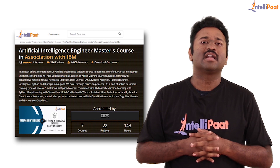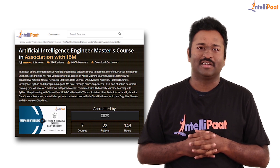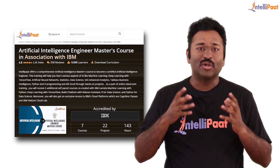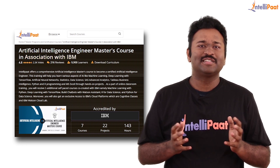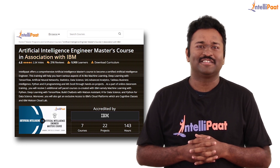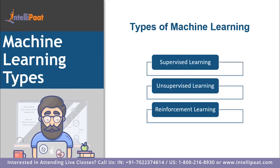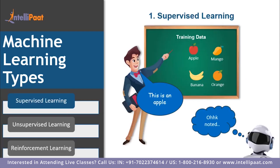Without any further delays, let's get started. Machine learning is subcategorized into supervised learning, unsupervised learning, and reinforcement learning. Let's start off with supervised learning. In supervised learning, we teach the machine using data which is labeled.